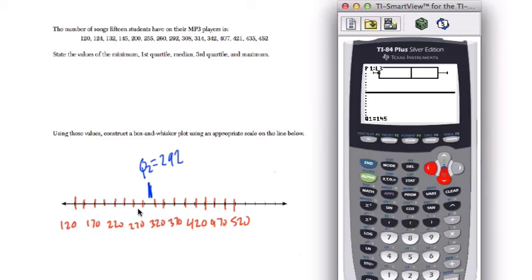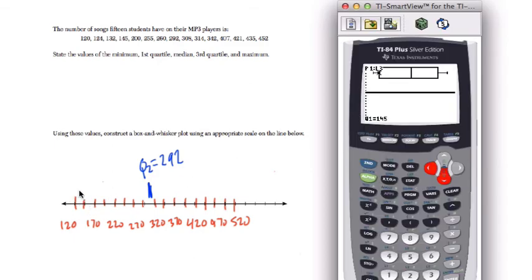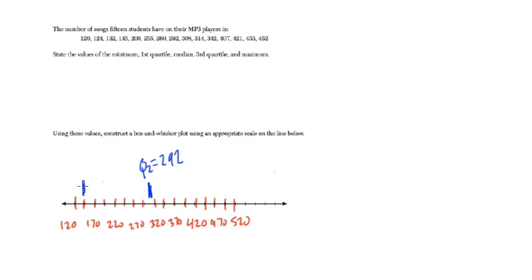Next. Q1 is 145. So here's 170. Here's 145. Double check that. 145. It's this line right here. Q1 equals 145. Keep going.